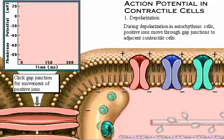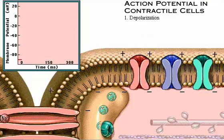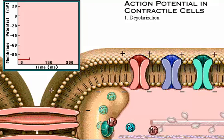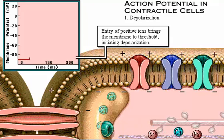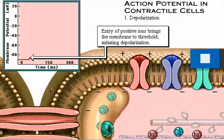During the depolarization in adjacent autorhythmic cells or contractile cells, a few positive ions move through the gap junctions into neighboring contractile cells. This entry of positive ions brings the membrane potential to threshold, triggering voltage-gated channels and initiating depolarization.